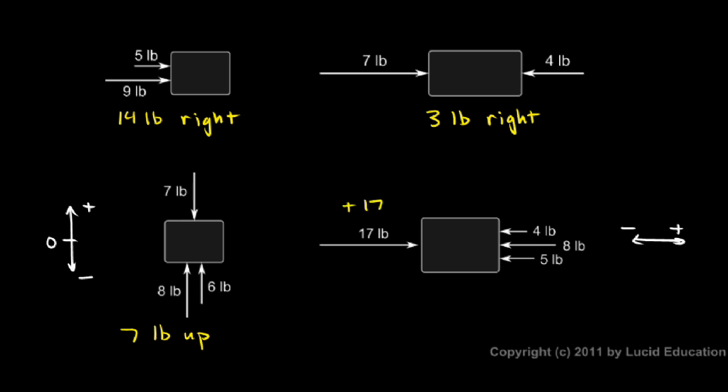And then over here we have 4 and 8, that's 12, plus 5 is 17, and those are all to the left, so we have negative 17. The total from all these three is negative 17, or 17 to the left. So we have a total of 17 pounds to the right, and 17 pounds to the left. The net force in this case is zero.